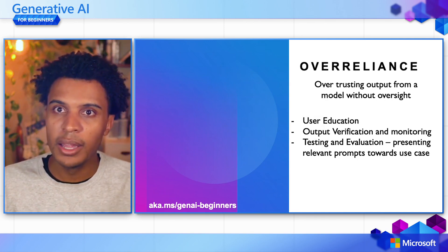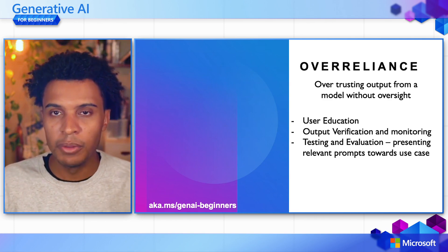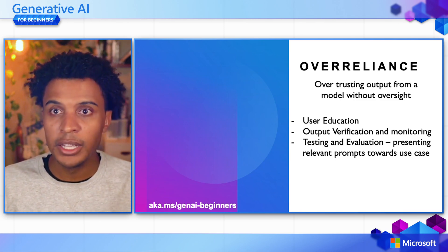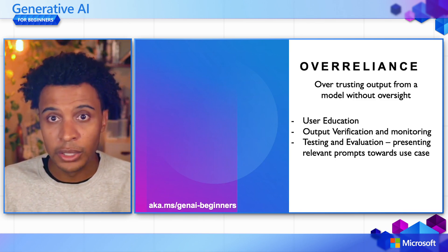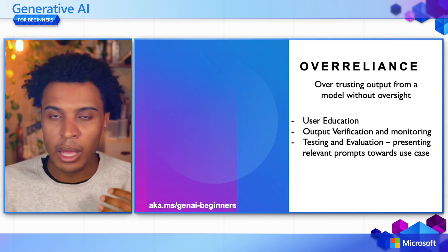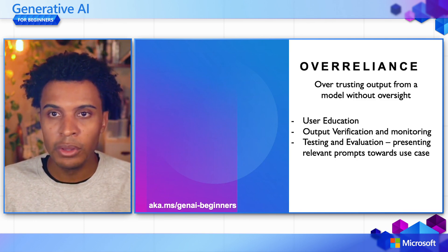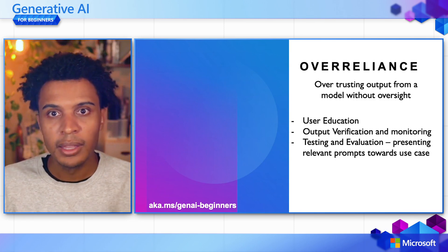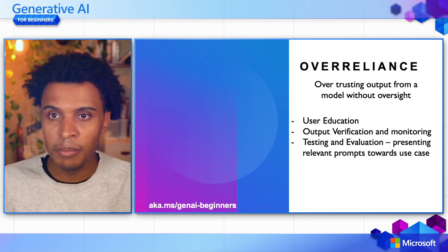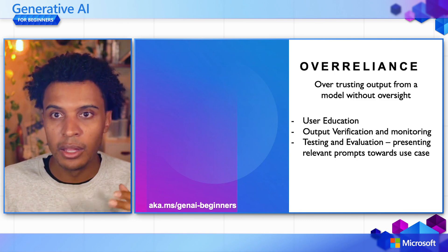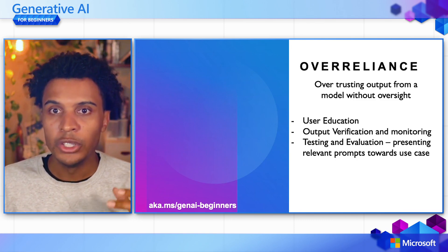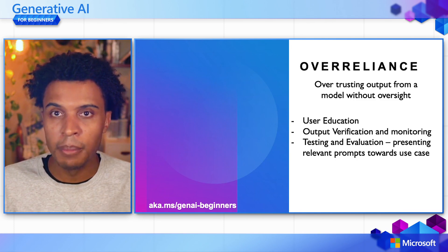On the over-reliance front, this is about over-trusting model output. First, user education: give users an understanding of the model's limitations and where errors could occur. Also, verify and monitor outputs using available monitoring tools. Finally, testing and evaluation — present not only relevant prompts but a diverse set of prompts for your use case, so you can see the types of outputs the model produces and how the user experience will be driven after launch into production.